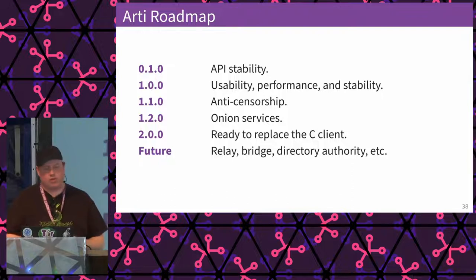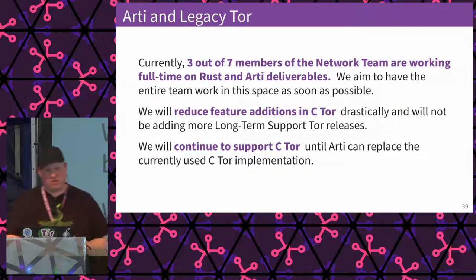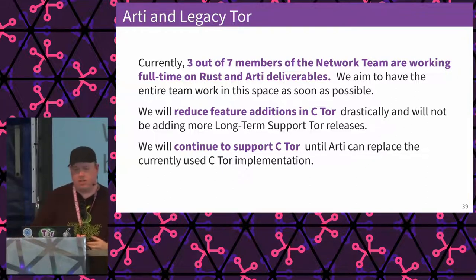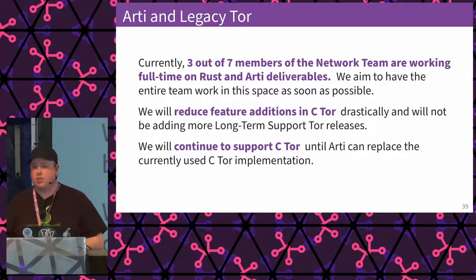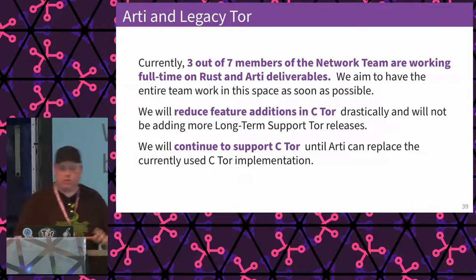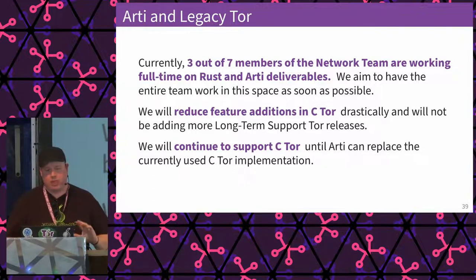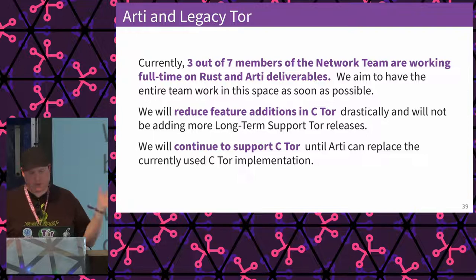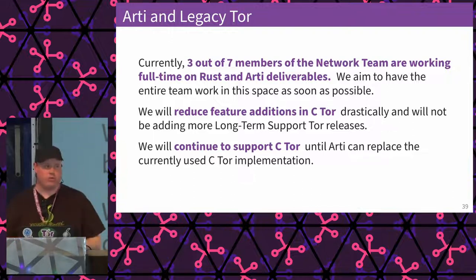This has implications for what we now call legacy Tor. Right now three out of seven team members are working full-time on Rust and Arti-related deliverables. Our goal is to get the entire team over, but we still have deliverables and must continue supporting C Tor, which is what ships in Tor Browser and currently runs the network. We'll maintain both in parallel for a while, but you'll likely see a reduction in new features going into C Tor, with the exception of network-touching stuff like post-quantum cryptography.